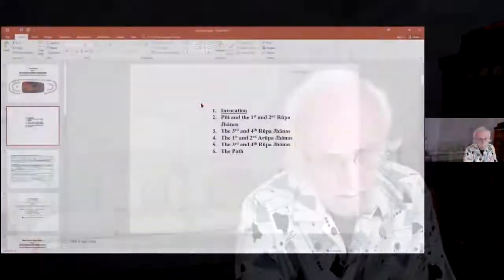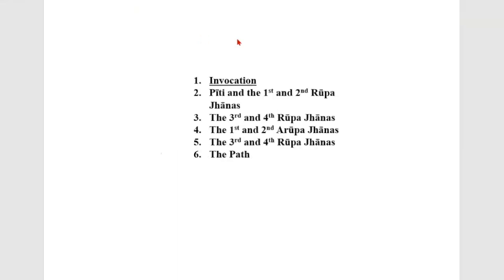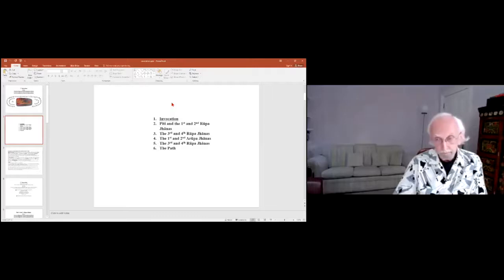The main themes are as listed here. The first one, the starting point, is invocation. The others are a strong focus on piti — energization, what it means, how to develop it — then of course the jhanas, the rupa jhanas and the arupa jhanas, and finally the path. The Yogavacara is describing the full path. It's a slightly more practical approach for meditators and particularly for teachers who like to be quite creative in how they teach and adapt to their students.